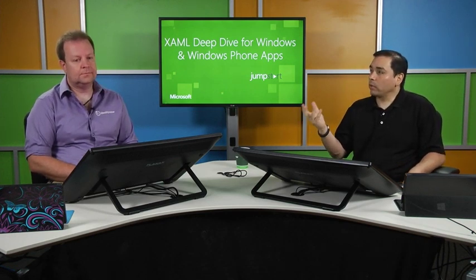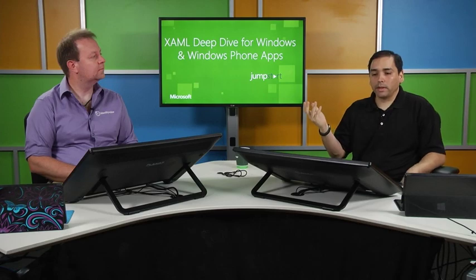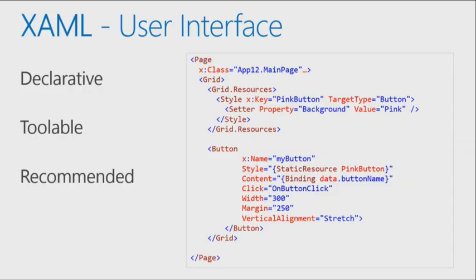That's actually why we arrived at XAML. From a user interface standpoint, here's a little snippet showing you a page with a grid layout and a button inside — a page with controls, styling, and data binding. You see the power of XAML in just this little snippet. We have four or five features that we're going to spend probably a whole hour talking about each today.